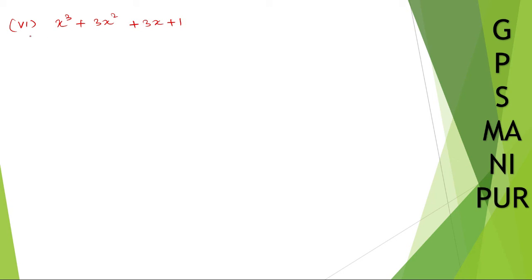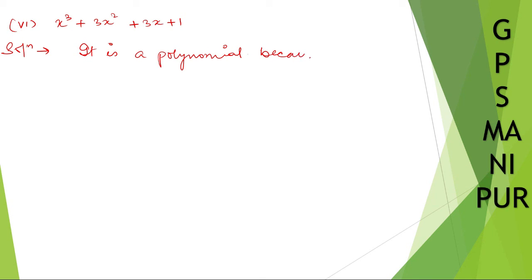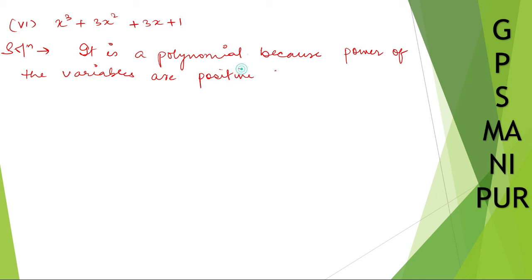Roman number six: x cubed plus 3x squared plus 3x plus 1. This is a polynomial because the power of the variables are positive integers.